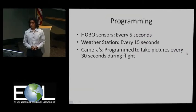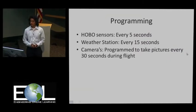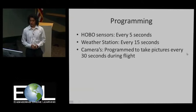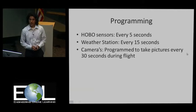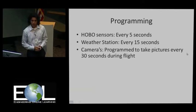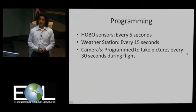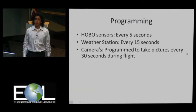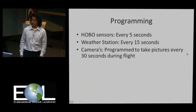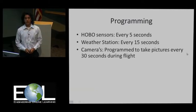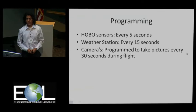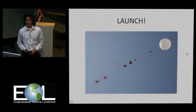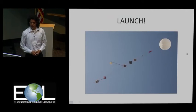Since all our equipment and instruments — like the Hobo data sensors, the weather stations, and even the cameras — were automated, we had to program them. The Hobo sensors took data every five seconds, the weather station took data every 15 seconds, and the cameras were programmed to take pictures every 30 seconds during the flight.